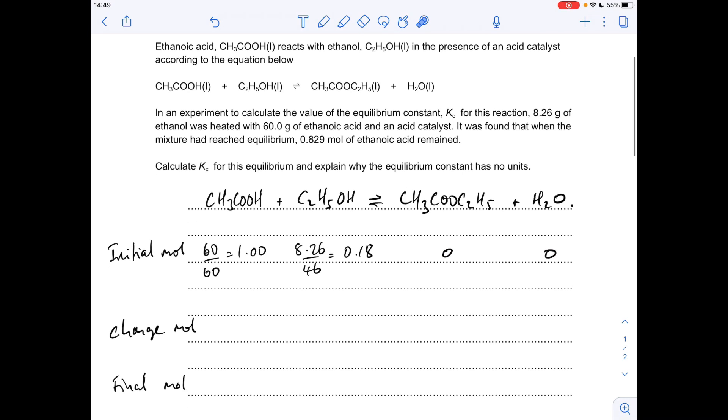I'm going to jump straight to the information we're told at equilibrium: 0.829 moles of ethanoic acid's left. So the final moles or the equilibrium moles of ethanoic acid is 0.829. From that we can get everything that we need.